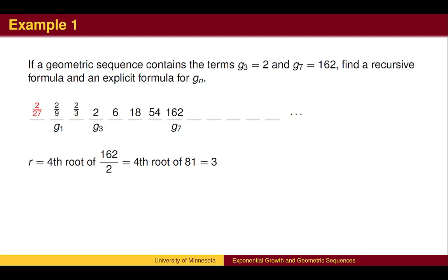For the explicit formula, we may wish to find g sub 0 equals 2 over 27. The recursive definition gives the initial term, g sub 1 equals 2 ninths, and the recursion where the next term is the previous term times the common ratio of 3. The explicit formula starts at 2 over 27, and then counts the number of steps, which is the number of times we multiply by 3, which is the exponent on 3.